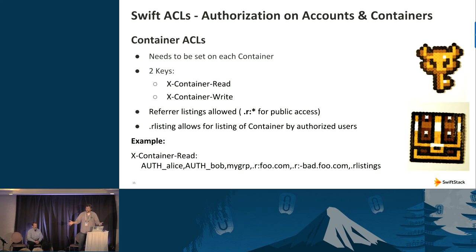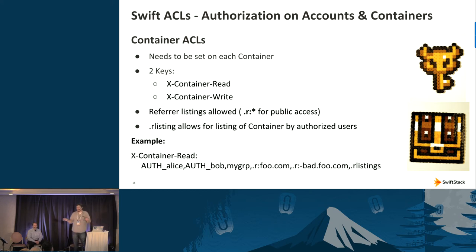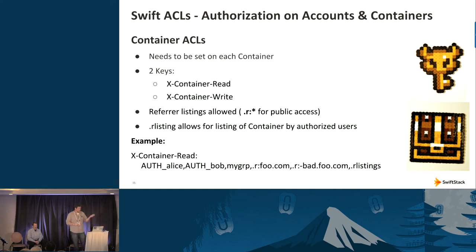Generally when working with Swift you're more likely to encounter container ACLs — the same concept applied per container. Within an account you have multiple containers, and each container can individually define who has access. Containers are the natural way in Swift to group objects. In a single account you might have a million or ten million objects grouped into separate containers. You can set behaviors of the object storage system on groups of objects by placing metadata on the container — container ACLs are an example of this.